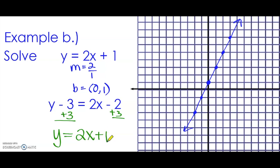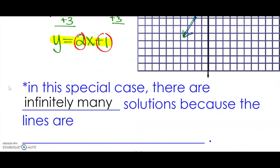Well, if you notice, that's exactly the same line as the first equation. So when I graph the second equation, it's going to map directly on top of the other line. These are called coincidental lines. They have exactly the same slope of 2 and exactly the same y-intercept of positive 1. So in this special case, there are infinitely many solutions because the lines are coincidental.